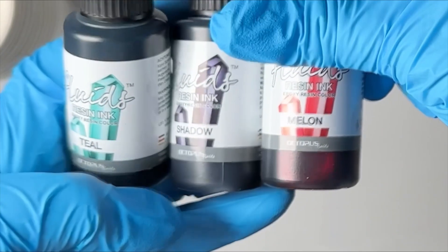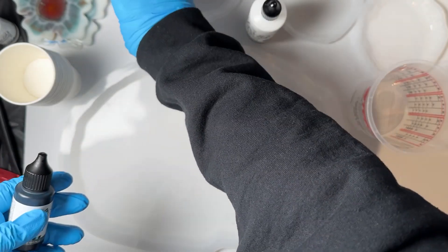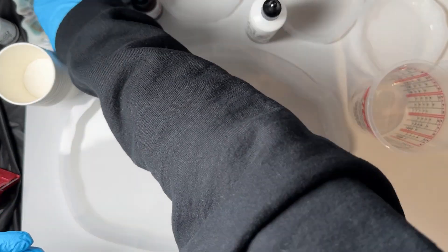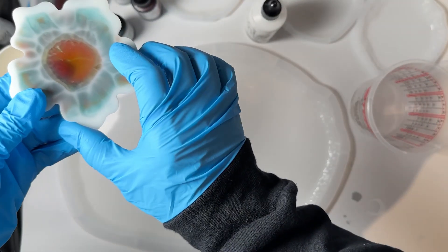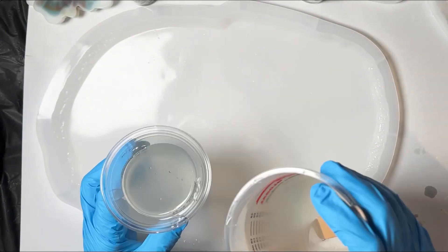I'm going to use teal shadow and melon as my resin ink colors. I'm going to try to make them look like the piece I did in the last experiment video. I mixed up about 16 ounces of resin.